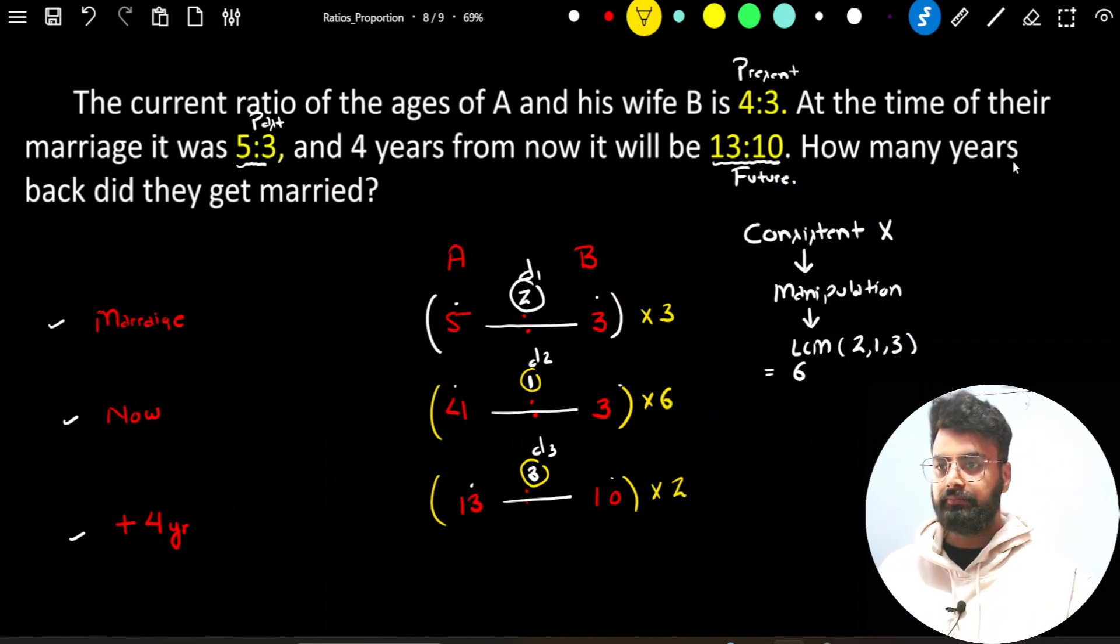Once you do so, you will get new values of ratio. Let's just multiply these numbers. 3 × 5 will give you 15, 3 × 3 would be 9. 6 × 4 would be 24, and then 6 × 3 is 18. And then 2 × 13 is 26, and this would be 20.